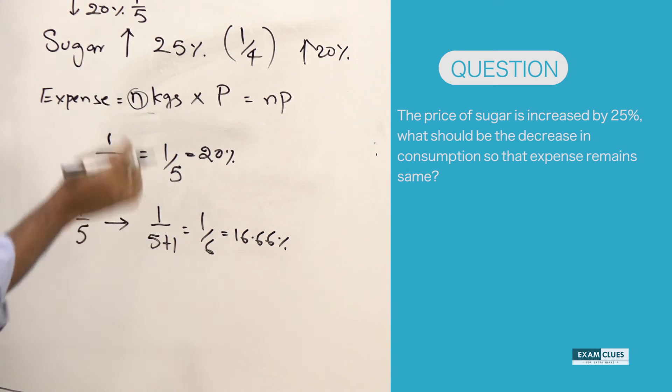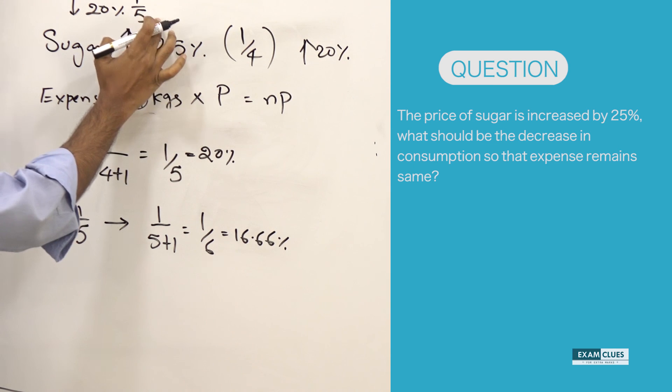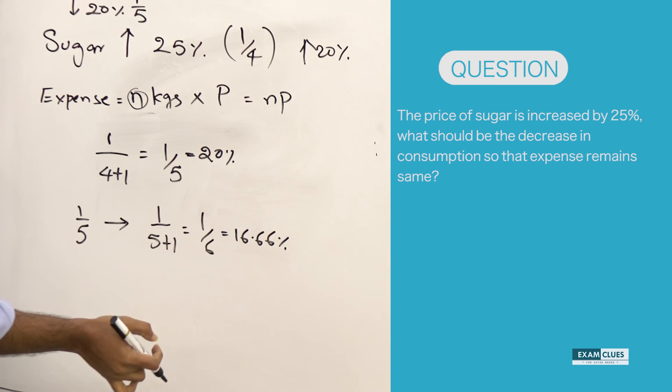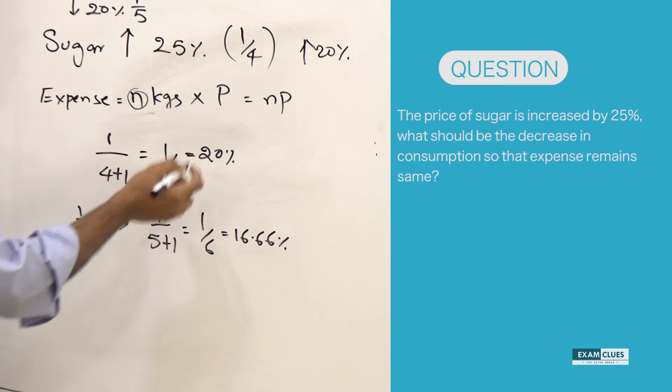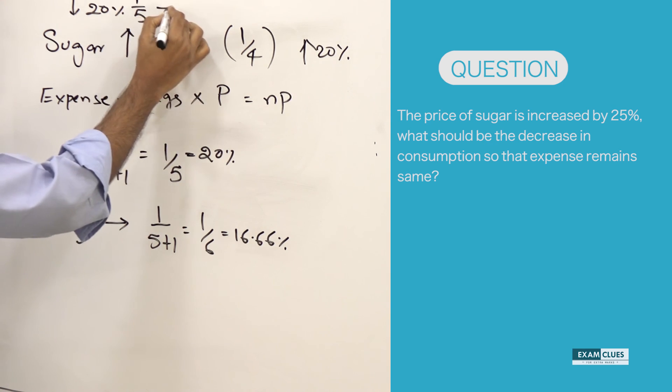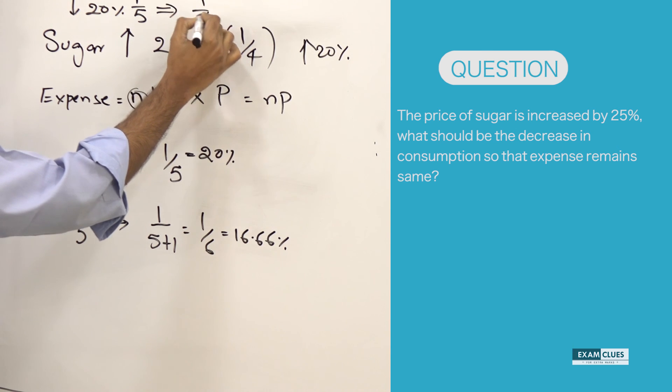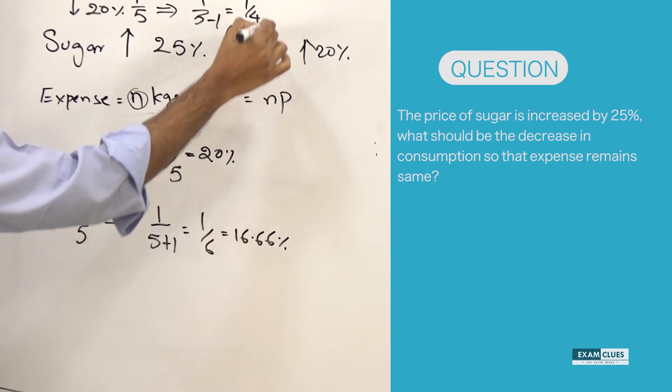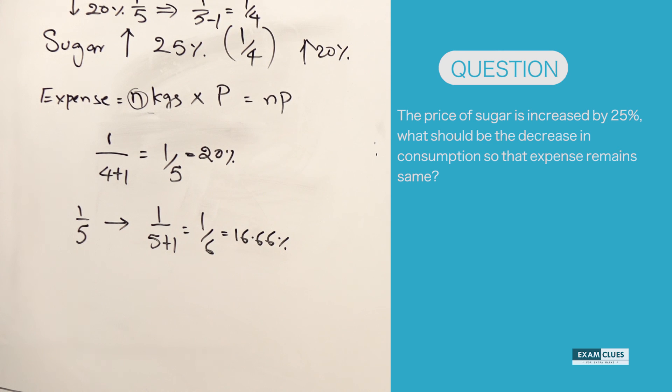This fraction value is simply 1 by 5. How can I increase the value of this fraction? By decreasing the denominator, then only the fraction value increases. What we need to do is subtract the numerator from the denominator, which is nothing but 1 by 5 minus 1, which is going to be 1 by 4. So you should increase your consumption by 25% in that particular case.